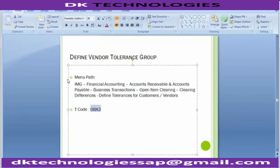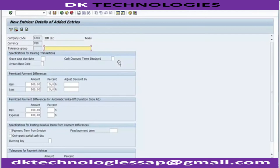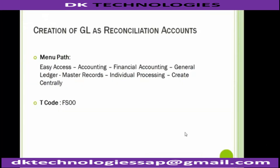Now that tolerances have been defined, moving to the next step: creation of GL as reconciliation account. As already said, when we post any transaction to a subsidiary ledger, the system automatically posts the same data to the general ledger. Accounts Payable is a sub-ledger; the reconciliation account is the GL account updated by AP transactions. Using this vendor account, different vendors or vendor groups can update different reconciliation accounts, or can even have the same reconciliation account. We will now be creating a vendor reconciliation account.